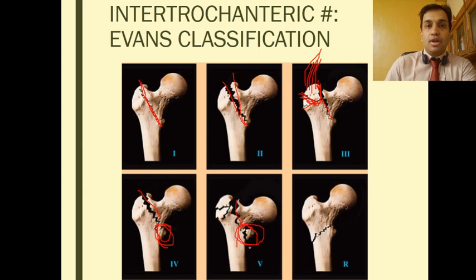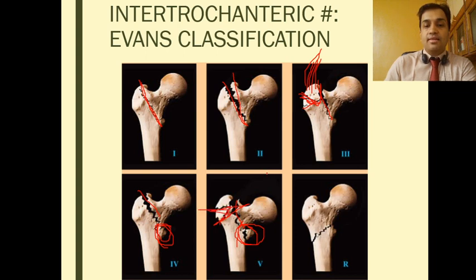A fracture to the calcar femorale will reduce stability and the patient will have to be immobilized for a variable period after surgery. Type 5 is a Type 4 with comminution of the greater trochanter.